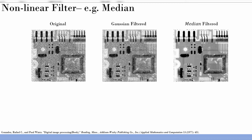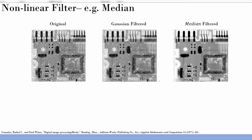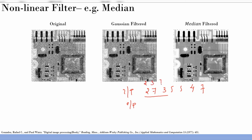Let me explain how the median filter works using a 1D example. Say the input is: 2, 7, 3, 5, 5, 4, 7. We apply a median filter with kernel size 3 — meaning we take groups of 3. The median filter orders the values in ascending order and picks the center value as the output.